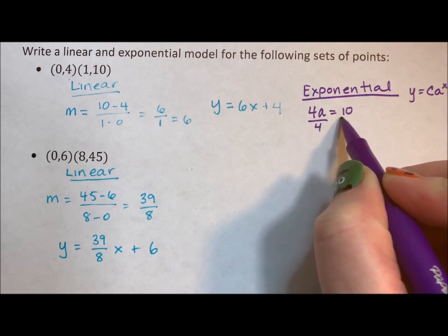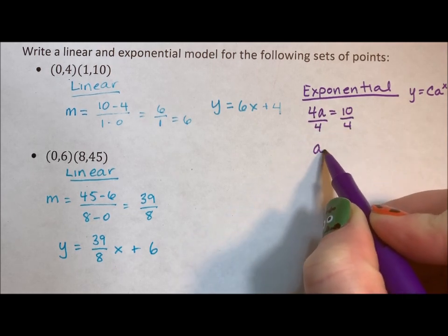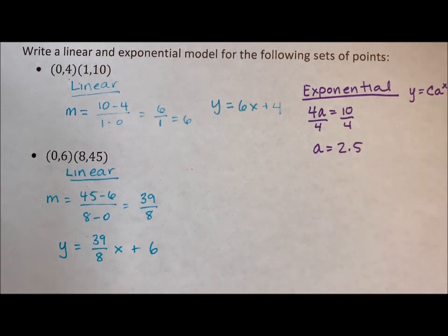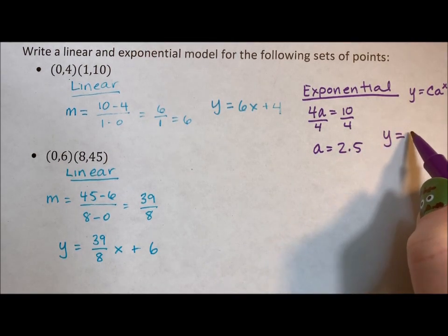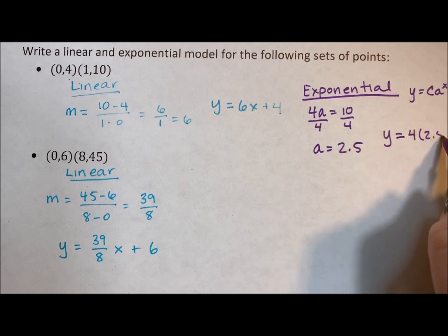So 4 times a equals 10. If we divide both sides by 4, a is equal to, and this time I'll go to decimal. Exponentials tend to go to decimal pretty quickly.